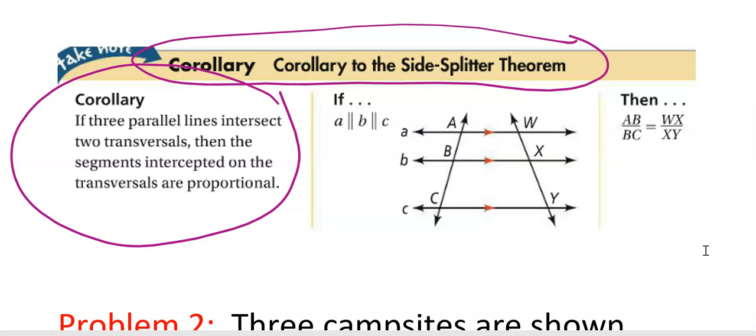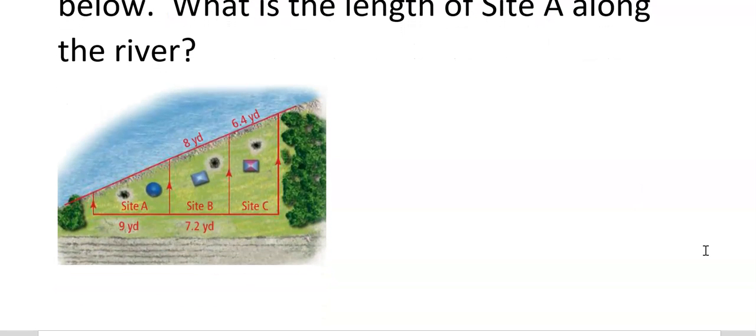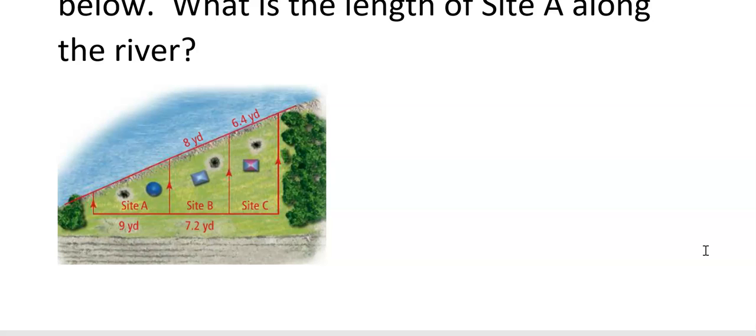Here's an example that relates to that one. Three campsites are shown below. What's the length of site A along the river? So here we have four sets of parallel lines, but it doesn't matter how many that you have. Think of it, if you kind of flip it upside down, I don't want to do it because you guys won't be able to see it, but these I'm going to put on the left side, these I'm going to put on the right side. You could do it the opposite as well.